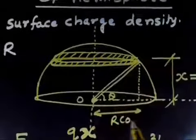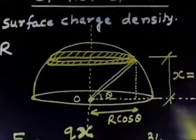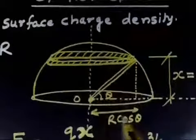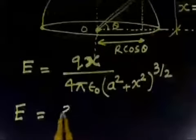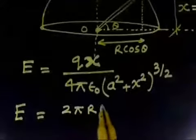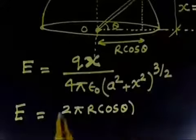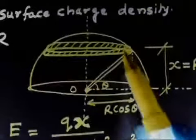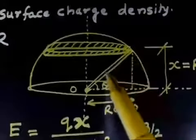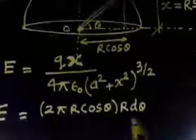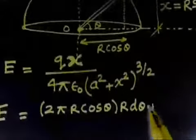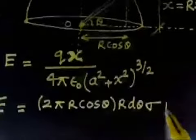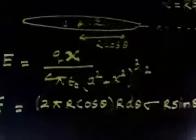The radius of this ring is R cosine theta, so the perimeter is 2 pi R cosine theta. The thickness of the ring along the surface is R d-theta. So the area of the elemental ring is 2 pi R cosine theta times R d-theta. Multiplying by sigma gives the charge dQ. The perpendicular distance x is R sine theta.